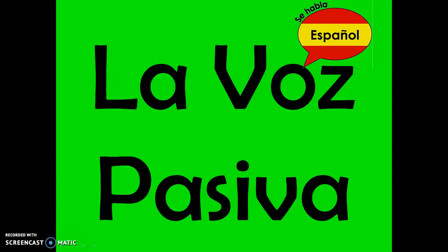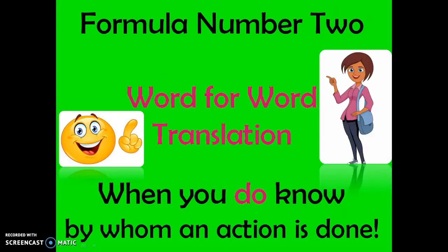Hola! Today we're going to talk about the second kind of passive voice. This is a passive voice we use when we know by whom an action is done. Our formula number two is a word-for-word translation. We use this formula when we know by whom an action is done.